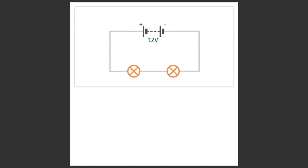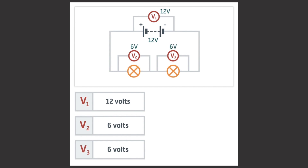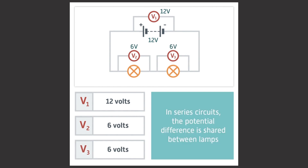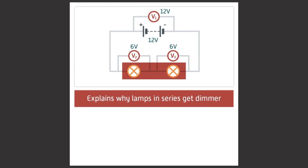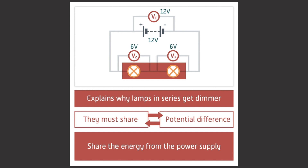Imagine we set up a circuit containing a 12 volt power supply and two lamps in series. We now add voltmeters V1, V2 and V3. V1 is placed in parallel across the power supply and V2 and V3 are placed in parallel across each lamp. Examples of the potential difference readings you may get are V1 equals 12 volts, V2 equals 6 volts and V3 equals 6 volts. We find that in a series circuit the potential difference is shared between lamps. This result explains why lamps placed in series get dimmer — they have to share potential difference and so they share the energy from the power supply.